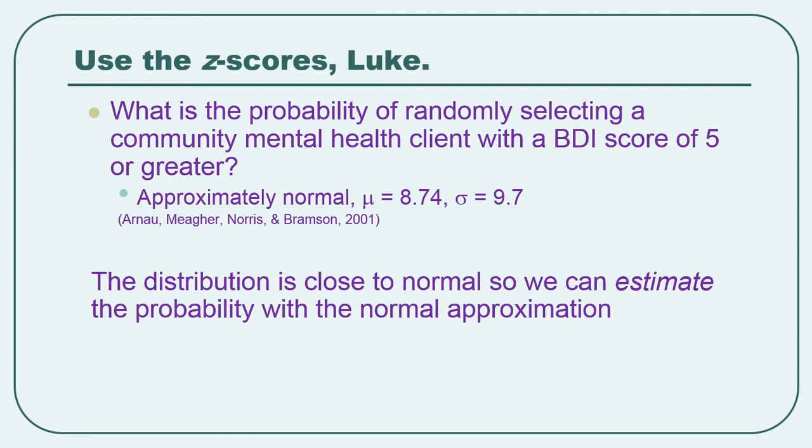And this is an interesting thing to know because if it's a very small percentage, then you know that your red flag should go up really high if you see a score of 5 or greater. Distribution of these scores is approximately normal, at least in one study, with a mean of 8.74 and a standard deviation of 9.7. And since it's approximately normal, we can estimate the probability using the normal approximation.